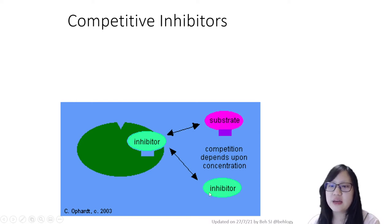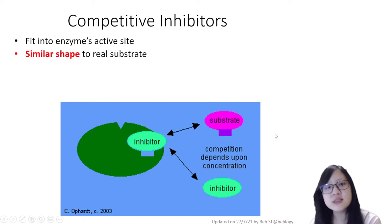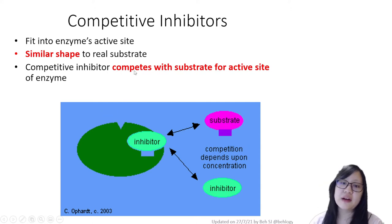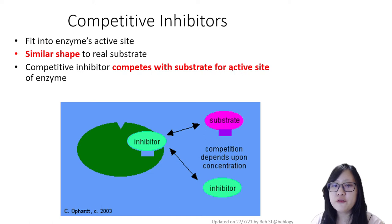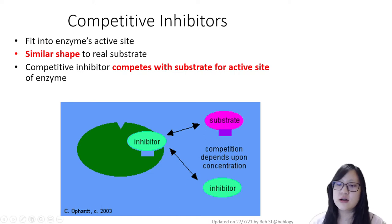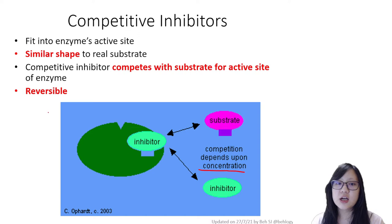Let's look at competitive inhibitors again. Competitive inhibitors can fit into the enzyme active site because they are similar in shape to the real substrate. The reason we call it a competitive inhibitor is that it competes with the substrate for the active site of the enzyme. This binding is not permanent — the inhibitor binds and then detaches, then binds again. So the competition depends very much on the concentration of the inhibitor present.